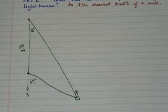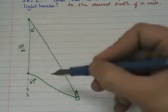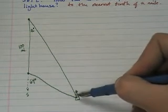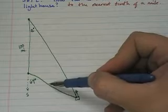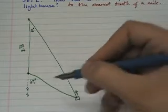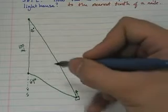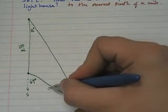Now, this is the drawing right here and what am I trying to find? I'm trying to find the distance from the ship the second time it spots the lighthouse to the lighthouse. So I'm trying to find this side right here. Call it what you want to. Call it A, call it B, call it C, call it X, it doesn't matter. I'm going to call this A.